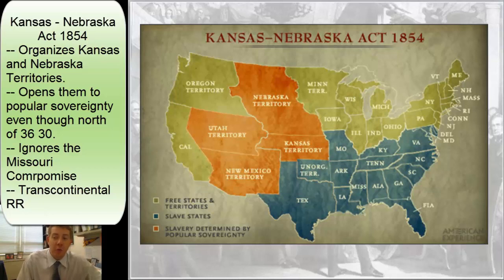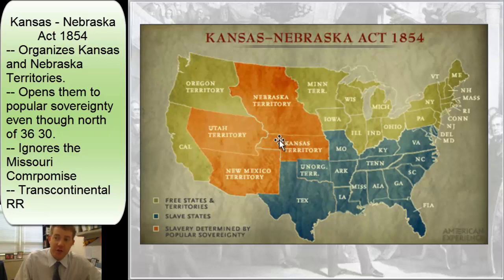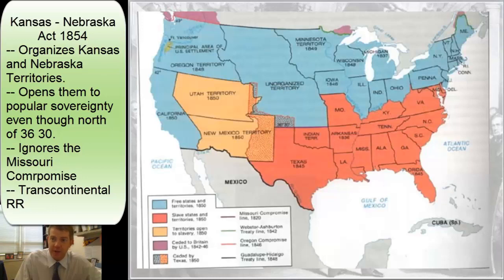Popular sovereignty seemed to be working in New Mexico and Utah because nobody was really moving there and there was no controversy. Kansas, however, borders Missouri and Iowa — this is somewhere people might actually move to, and that's what Douglas wanted. His ultimate goal was to get a transcontinental railroad built, and he believed the only way that would work is if there were stations and stops in this region. So he needed to encourage people to settle this old unorganized territory.